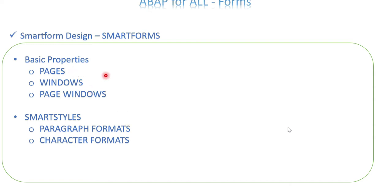The first basic properties of SmartForms are pages, windows, and page windows. Pages — as per the design, you decide how many pages to create, maybe one or more than one. Windows — how many windows you want, as per my design: header, item, logo, and footer. The same windows are going to be used in the second page as well. You don't create separate windows per page if the content is the same. Pages are created separately, windows are created separately, and then you combine them under page windows — you map the windows to the pages.